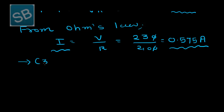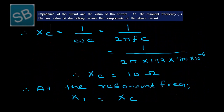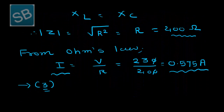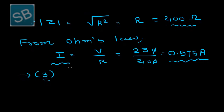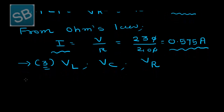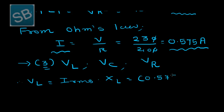Now the third task is to find the RMS value of voltage across the components of the circuit: RMS voltage across inductor L, across capacitor C, and across resistance R. Starting with the inductor: VL equals IRMS into XL, that is 0.575 into 10, giving 5.75 volts.